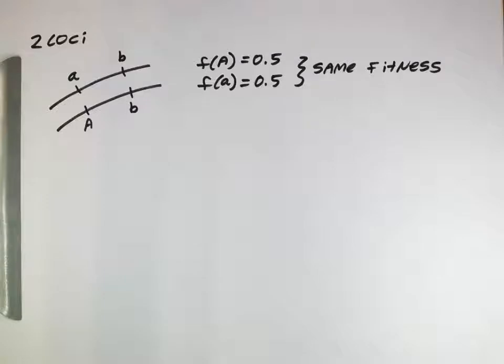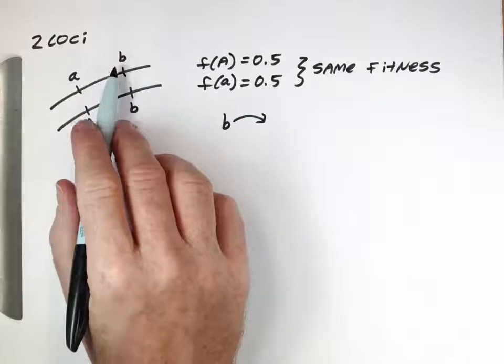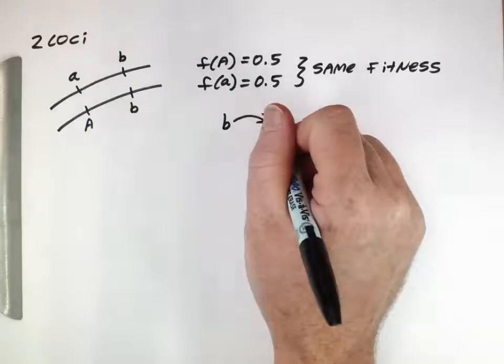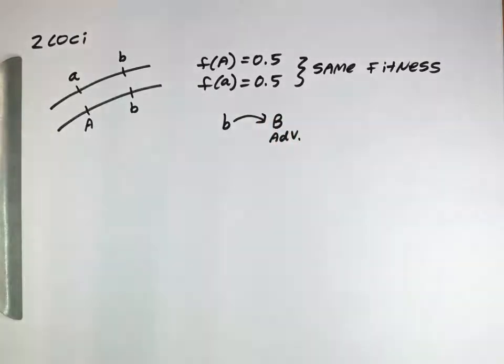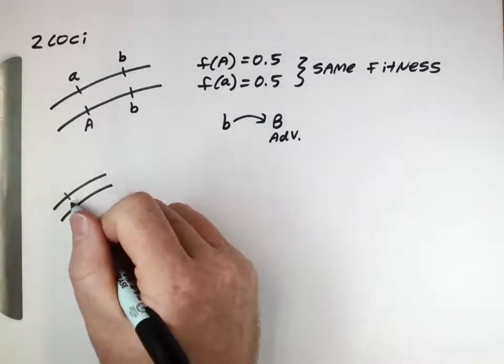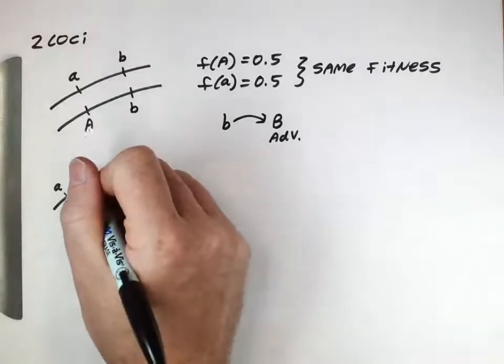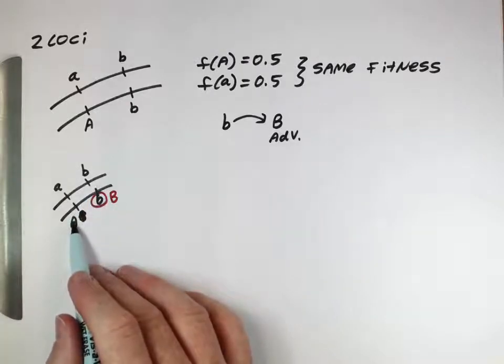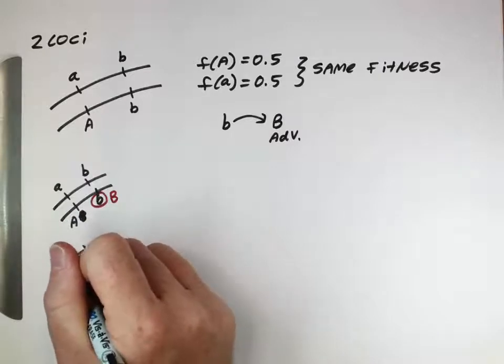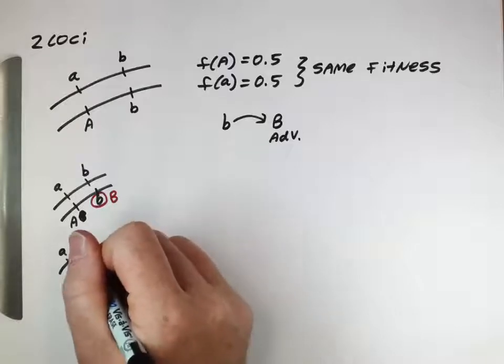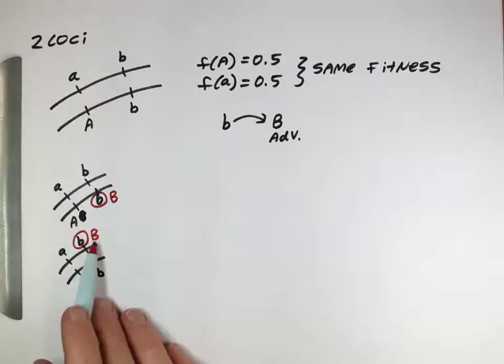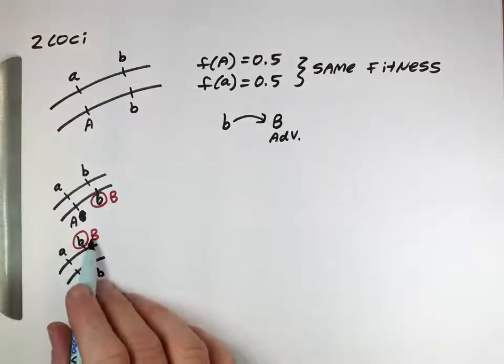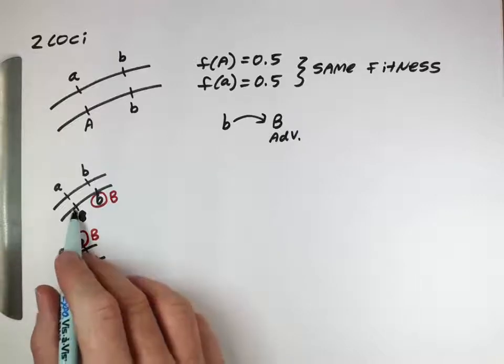Now let's think about what happens if there's a mutation on one of these lowercase b alleles in some individual in the population to create a new allele that is advantageous. If that happens in a population like this, if that mutation happens here on that chromosome, then this advantageous allele is now in close proximity to a capital A allele. On the other hand, if the mutation happens to occur here, now that advantageous allele is on the same chromosome as the lowercase a allele. And so randomly this capital B allele is going to be associated with either this allele or this allele just by random chance.